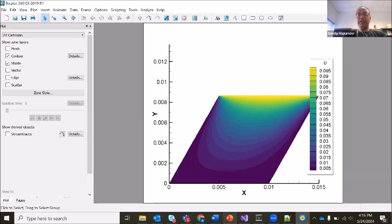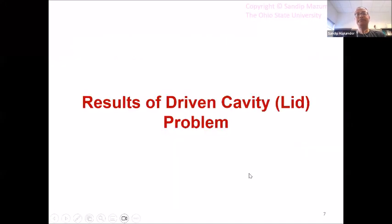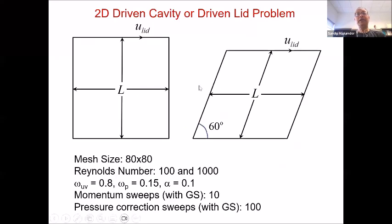All right. So with that being said, with these tips out of the way, let's look at our solutions a little bit. So again, just to refresh our mind, this is the problem we are solving. It's the driven cavity problem with an 80 by 80 mesh. Those are the results I'm going to show you. And the Reynolds numbers we are considering are 100 and 1000.